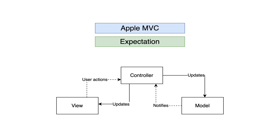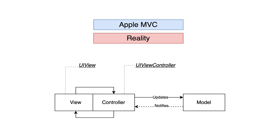View controller offloading has become a significant concern for iOS developers. Take a look at this diagram that illustrates how MVC works in real-world iOS development. One of the reasons the Massive View Controller problem arises is because in practice, UIViewController is tightly coupled with the view. While you can move some business logic and data transformation to the model, the view controller ends up becoming a delegate and data source for everything, leading to its rapid growth in size.